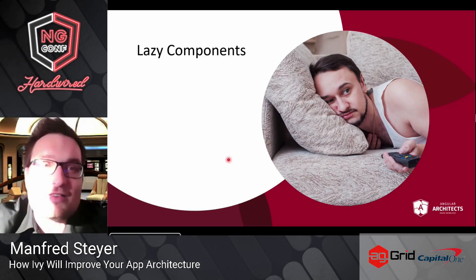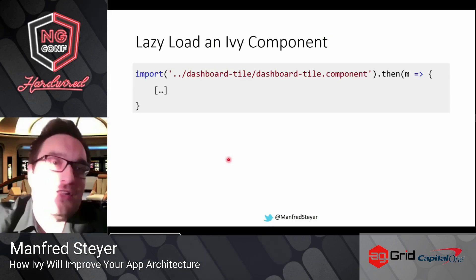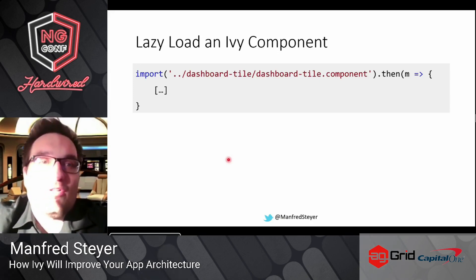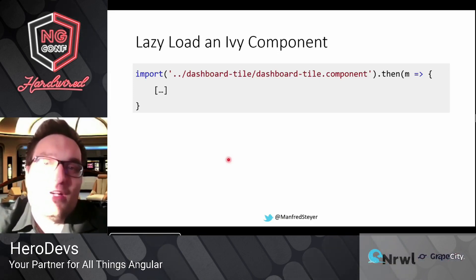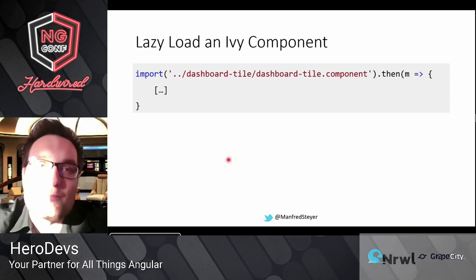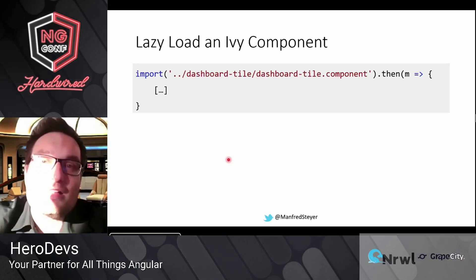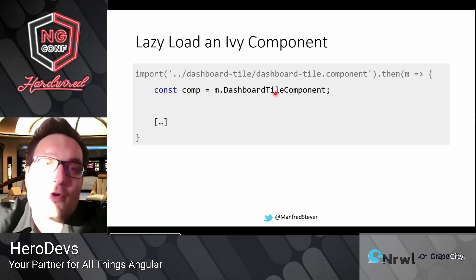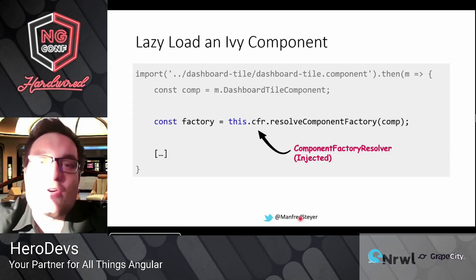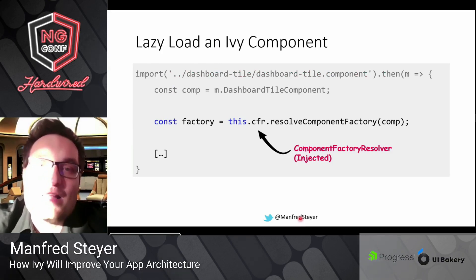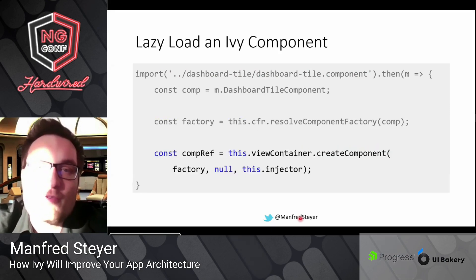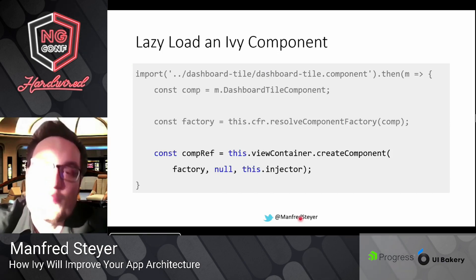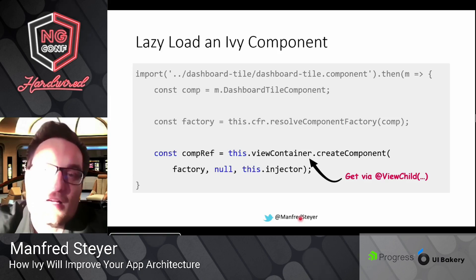Let's start with lazy components. When it comes to lazy loading components, it's really easy with Ivy because all you need is the dynamic import introduced with ECMAScript 2017. You point to the file with your component, get back an object representing the whole file, extract the right export — here it's the DashboardDialComponent — and you need a ComponentFactoryResolver, which you can get via dependency injection. This gives you a factory for the component, and then you can instantiate it within a view container.